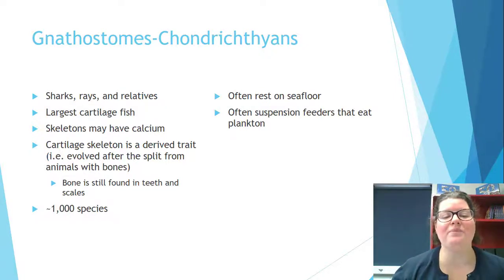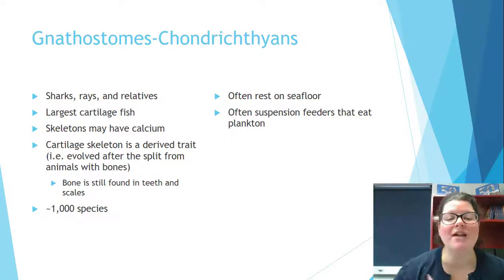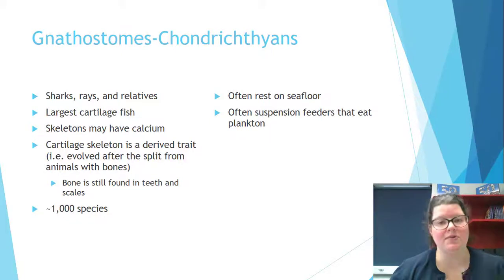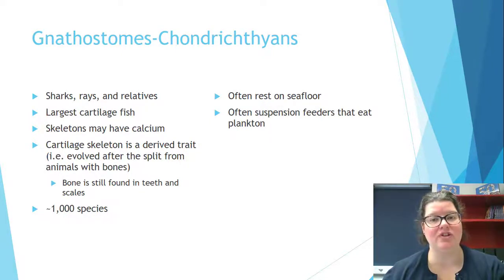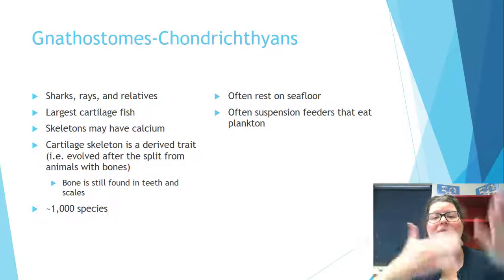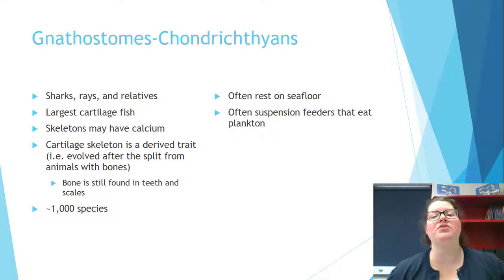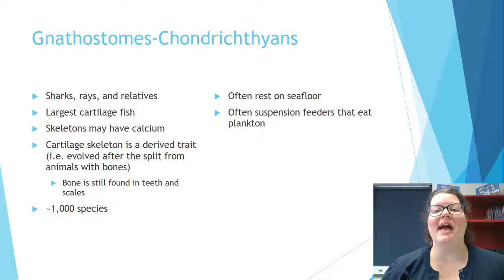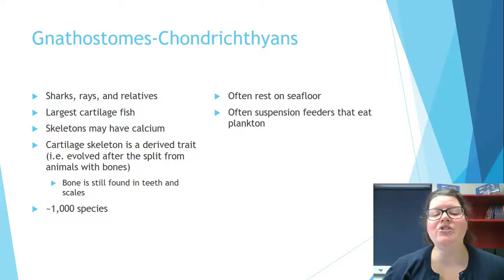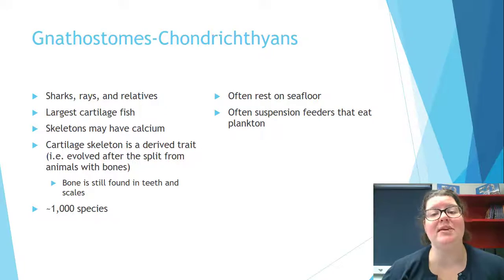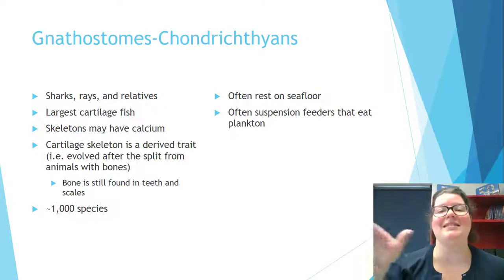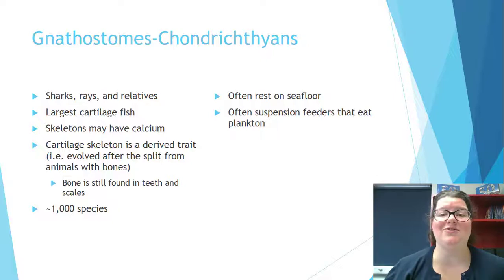Sharks, rays, and relatives are the largest cartilaginous fish. The cartilage in chondrichthyans is actually a derived, regressive trait — animals with bones came first, and then it became more beneficial for sharks to be flexible and bendy to catch prey. They do still have bone in their teeth and scales. There are about a thousand species of shark.